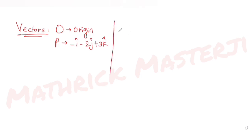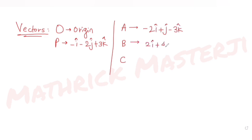The question further tells us the position vectors of the points A, B, and C. We have been given three position vectors: A is minus 2i plus j minus 3k, vector B is 2i plus 4j minus 2k, and vector C is minus 4i plus 2j minus k.